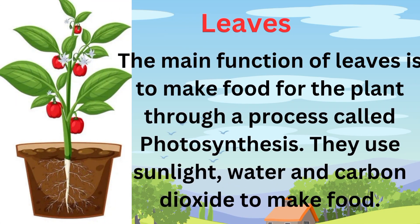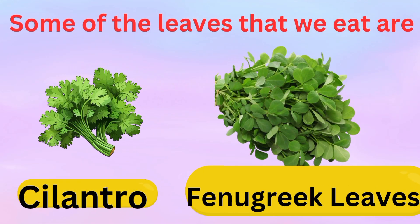Leaves. The main function of the leaves is to make food for the plant through a process called photosynthesis. They use sunlight, water and carbon dioxide to make food. Some of the leaves that we eat are cilantro and fenugreek leaves.